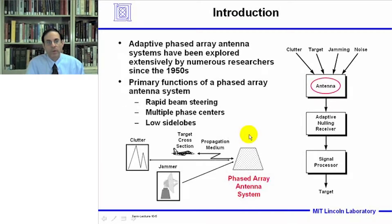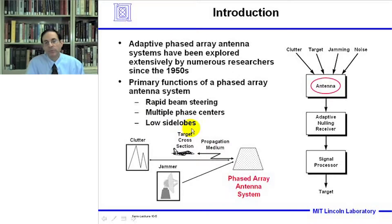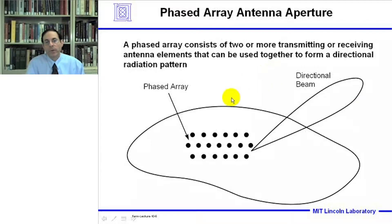By way of introduction, adaptive phased array antenna systems have been explored extensively by numerous researchers since the 1950s. The primary functions of a phased array antenna system are to provide rapid beam steering, sometimes with multiple phase centers, and in many cases with low side lobes. In this lecture, we're going to be talking primarily about the antenna characteristics. A phased array antenna aperture would consist typically of two or more transmitting or receiving antenna elements that can be used to form a directional radiation pattern.